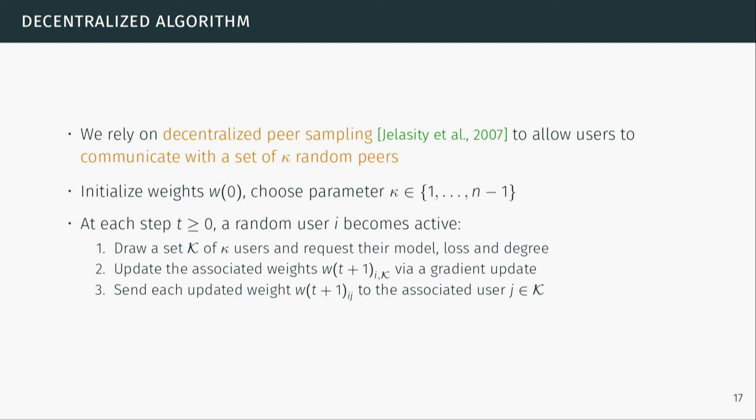For the graph update algorithm, we cannot simply send messages across graph edges since that's the thing we want to update. Devices need to discover new devices they haven't connected to before that might be more similar. For this we use a decentralized systems primitive called peer sampling, which allows devices in a decentralized network to draw a set of random peers uniformly across the network — a well-described primitive in the systems literature.